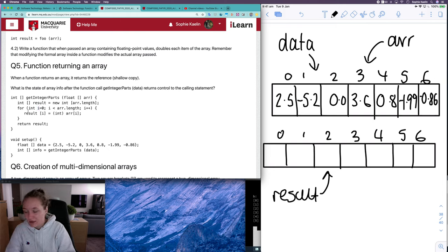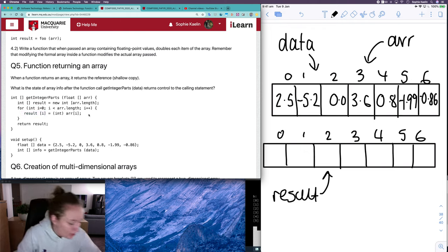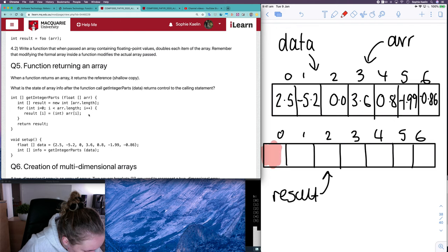So if we start at i is equal to zero, we're saying result zero is equal to, we've got an int casting here, array zero. So result zero is equal to array zero. So if we have a look at just that part, we've got result zero, which is here.